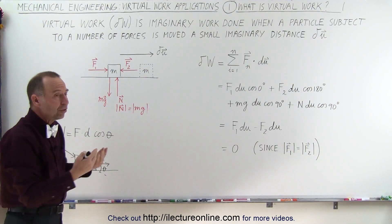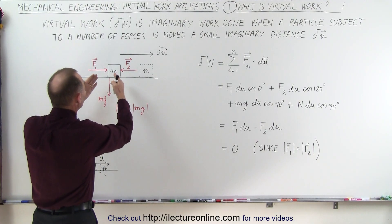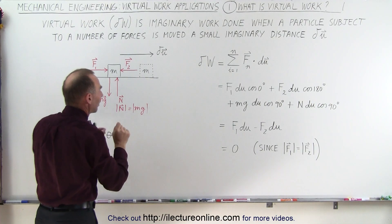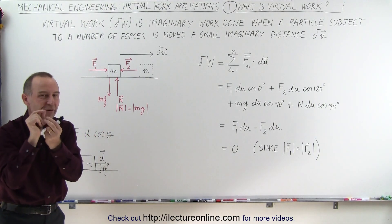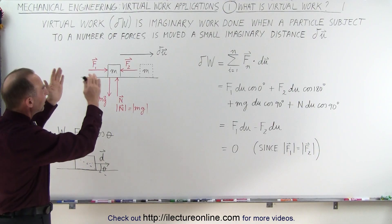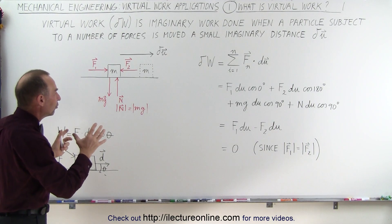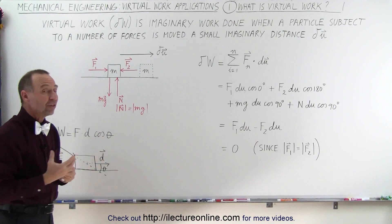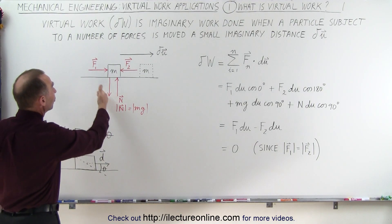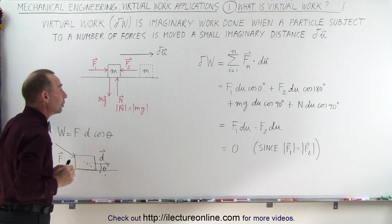The question is: the forces acting on this object — how much work would they do if we move the object from here to here? Now of course we're talking about moving a very tiny little distance. In this particular example, we've set it up so that all the forces acting on this object actually cancel out and the net force is equal to zero, which means the object is in equilibrium.